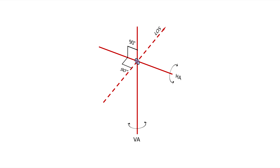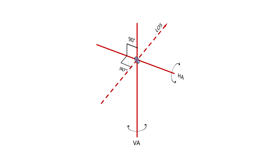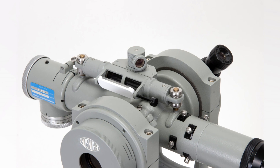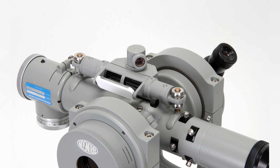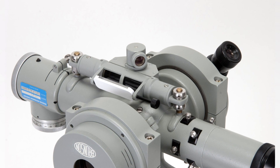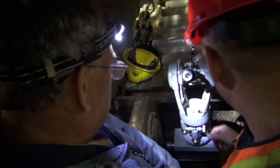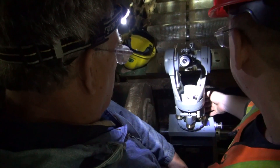The jig transit can also be precisely leveled, which allows a technician to create a gravity-based reference system from which all machine surfaces can be measured.